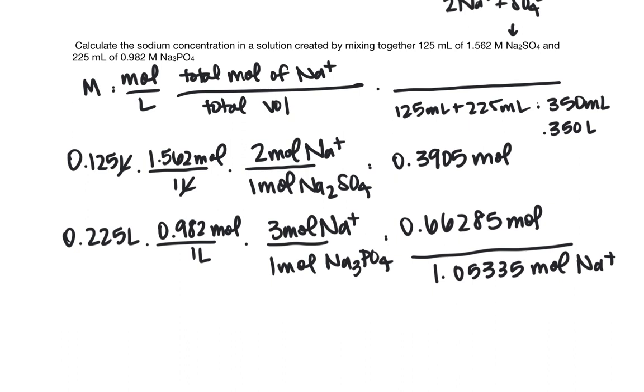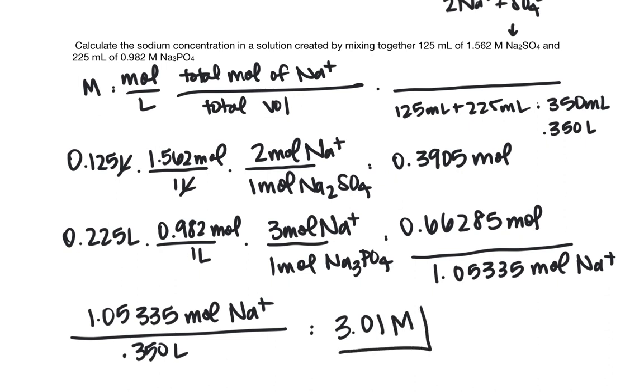Now we need to calculate the molarity, which is 1.05335 moles of Na plus divided by our total volume of 0.350 liters. And this gives me 3.01 molar.